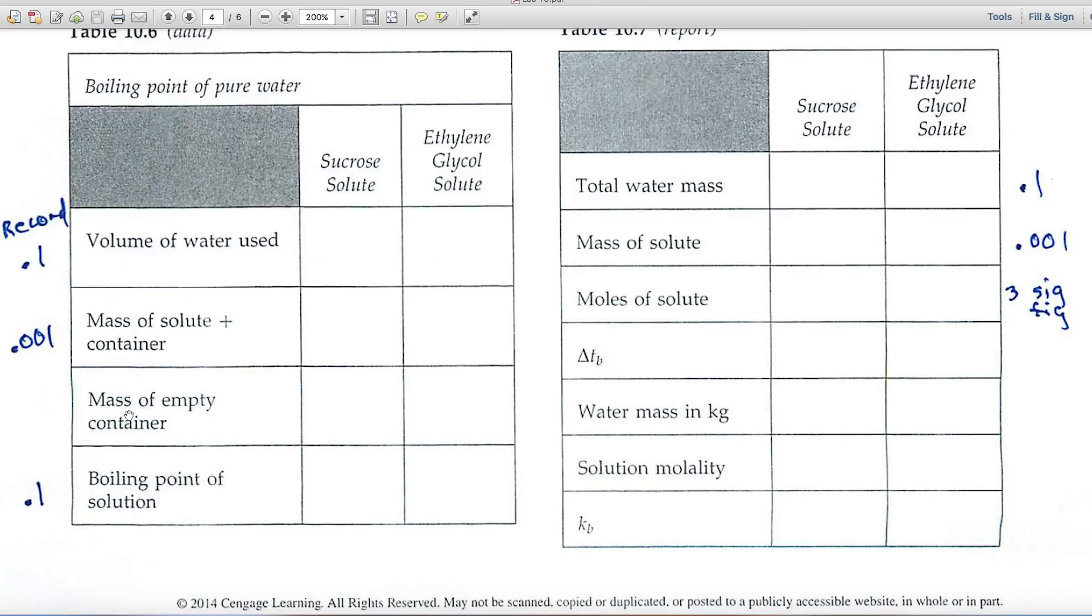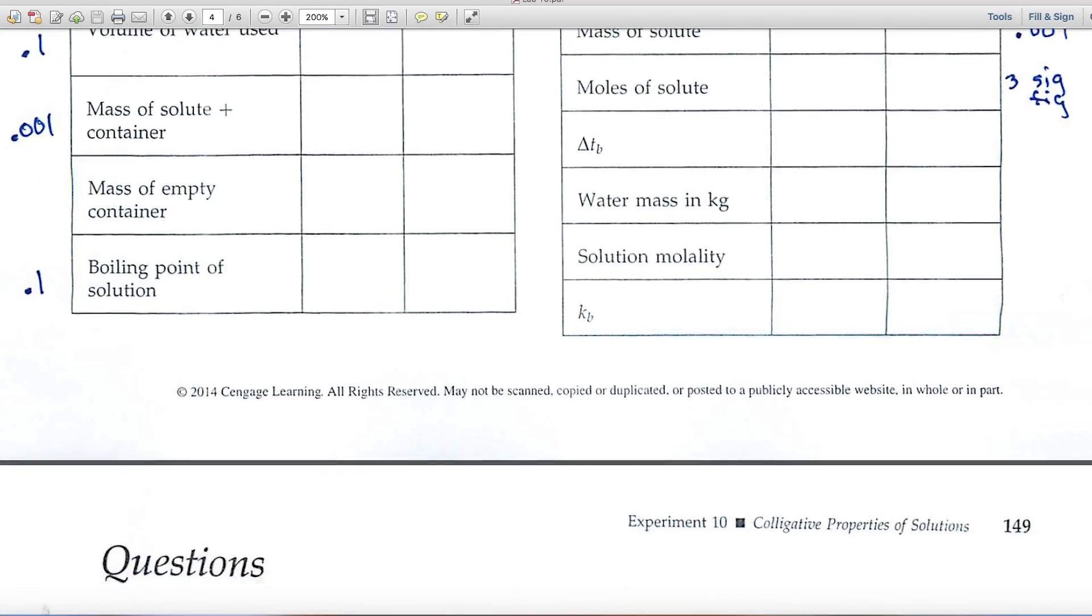Whereas freezing points are depressed, boiling points are elevated when you measure solutions. Over here on the right-hand side, the total mass, because you're converting this from the volume of water used, you'll only be able to get values to the tenth. However, this mass of solute, you're using the balances, and you can measure those to the thousandth. Moles of solute, you'd have three significant figures. And then be sure and track significant figures as you go down through that calculation.